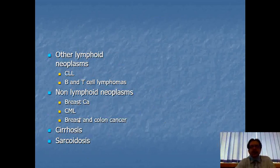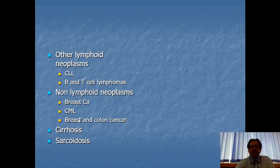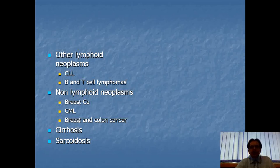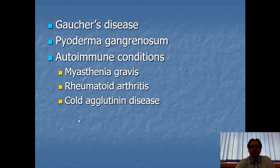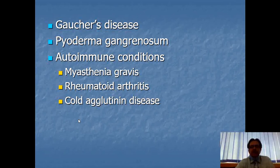Gaucher's disease, pyoderma gangrenosum, and autoimmune conditions like myasthenia gravis, rheumatoid arthritis, and cold agglutinin disease are weaker contenders in the differential diagnosis of multiple myeloma.